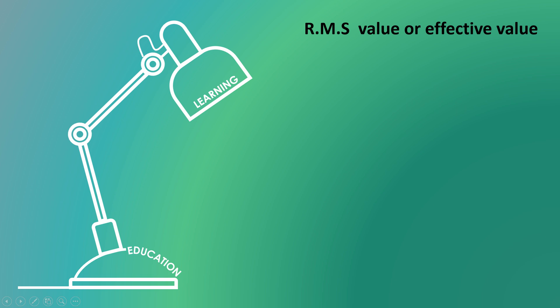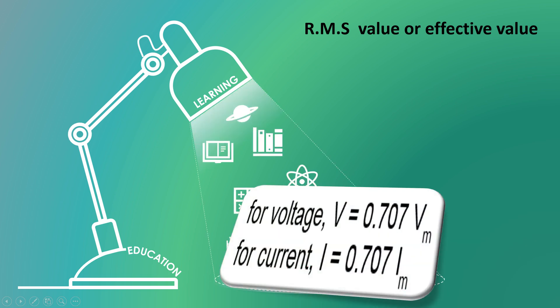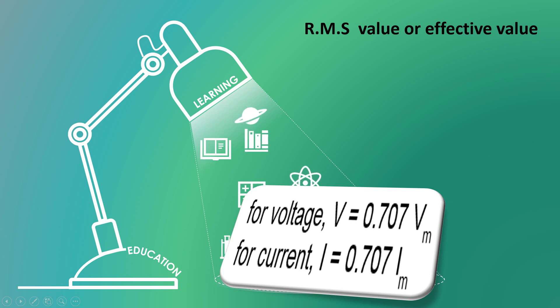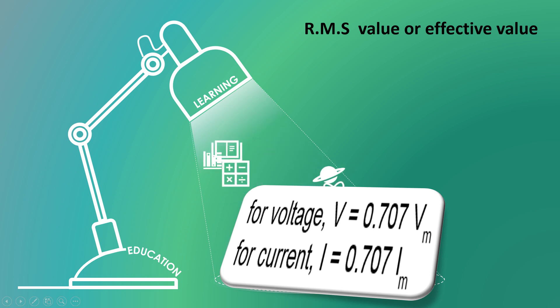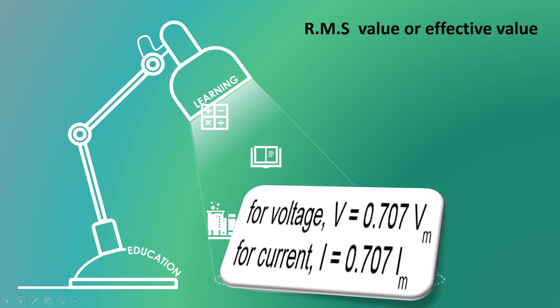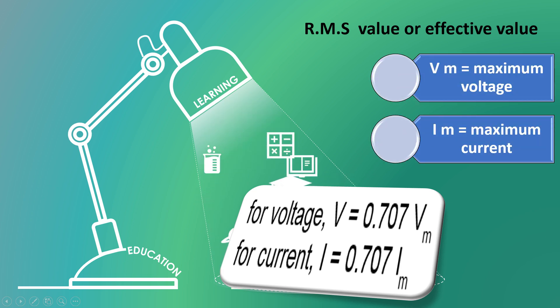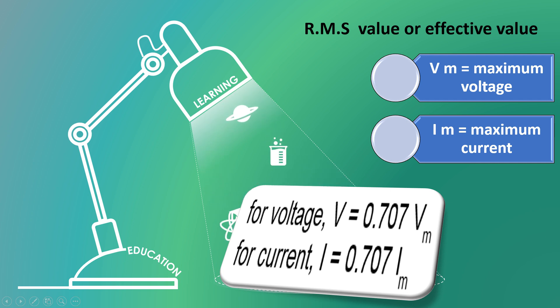This is formula number 1 to find the RMS value or effective value in AC circuit. The formula is V equals to 0.707 Vm, I equals to 0.707 Im, where Vm means maximum voltage, Im means maximum current.